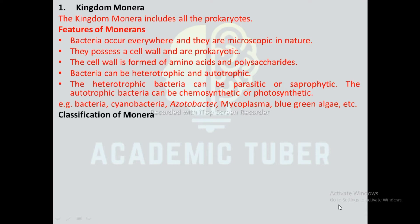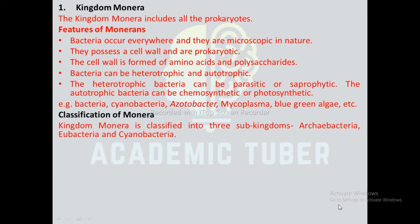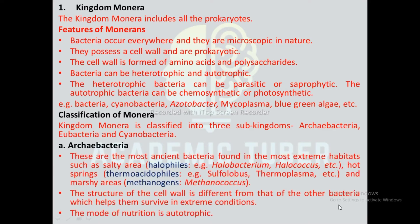Classification of Monera: Kingdom Monera is classified into three sub-kingdoms — Archaebacteria, Eubacteria, and Cyanobacteria. Archaebacteria are the most ancient bacteria found in the most extreme habitats, such as: salty areas (halophiles, e.g. Halobacterium, Halococcus); hot springs (thermoacidophiles, e.g. Sulfolobus, Thermoplasma); and marshy areas (methanogens, e.g. Methanococcus). The structure of the cell wall is different from that of other bacteria, which helps them survive in extreme conditions. Their mode of nutrition is autotrophic.